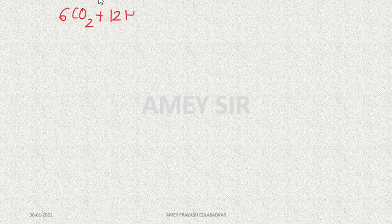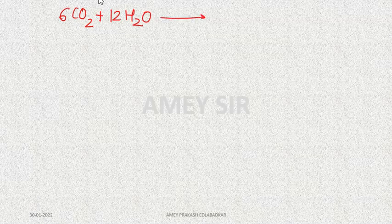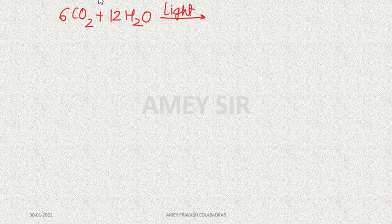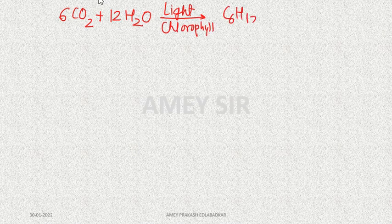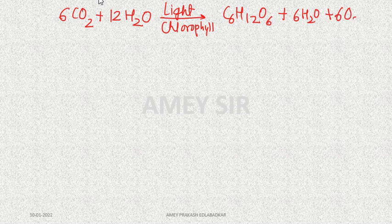Understanding the meaning of photosynthesis is very important. The definition: photosynthesis is an intracellular process in which low molecular weight substances like CO₂ and water are combined together in the presence of light and chlorophyll to produce a high molecular weight substance — that is, chemical energy stored in the form of carbohydrate (C₆H₁₂O₆) — and water along with oxygen are released as by-products.